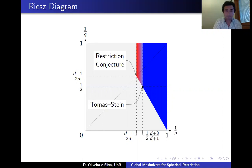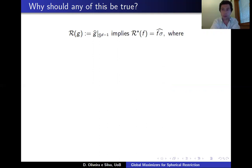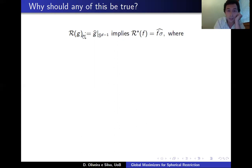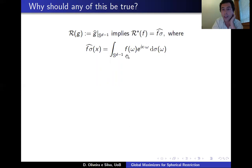Before discussing the extremal problem, let me explain why any of these should be true. If I denote by R the restriction operator on the sphere, its adjoint R* is the extension operator: you take a function f on the sphere and integrate it against the Fourier kernel with respect to surface measure. When q is 2, this composition acts on a generic function by convolving it with the Fourier transform of surface measure, making it a smoothing convolution operator.